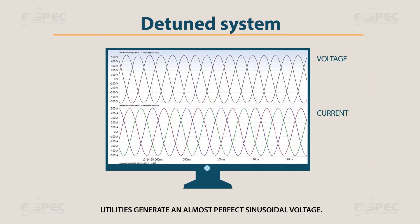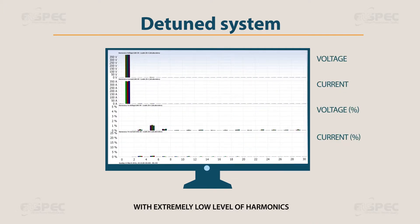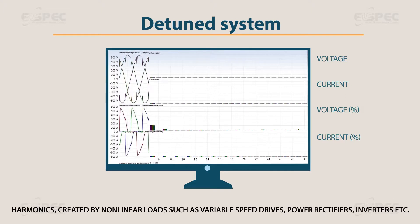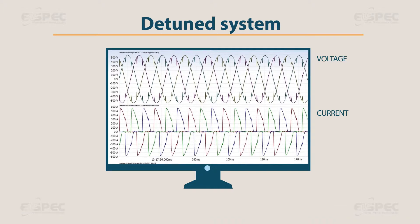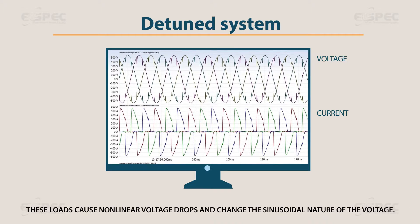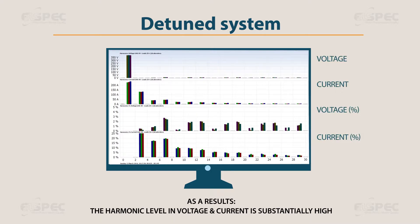Utilities generate an almost perfect sinusoidal voltage with an extremely low level of harmonics. Harmonics created by non-linear loads such as variable speed drives, power rectifiers, inverters, etc., cause non-linear voltage drops and change the sinusoidal nature of the voltage. As a result, the harmonic level in voltage and current is substantially high.